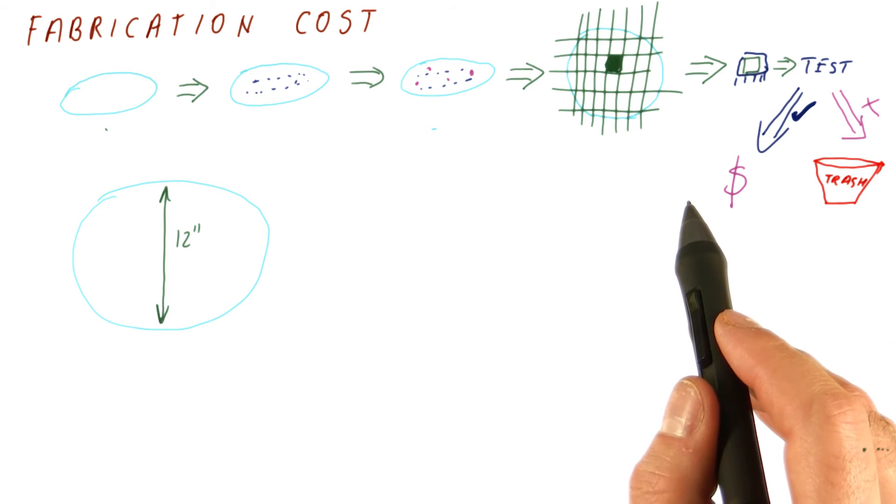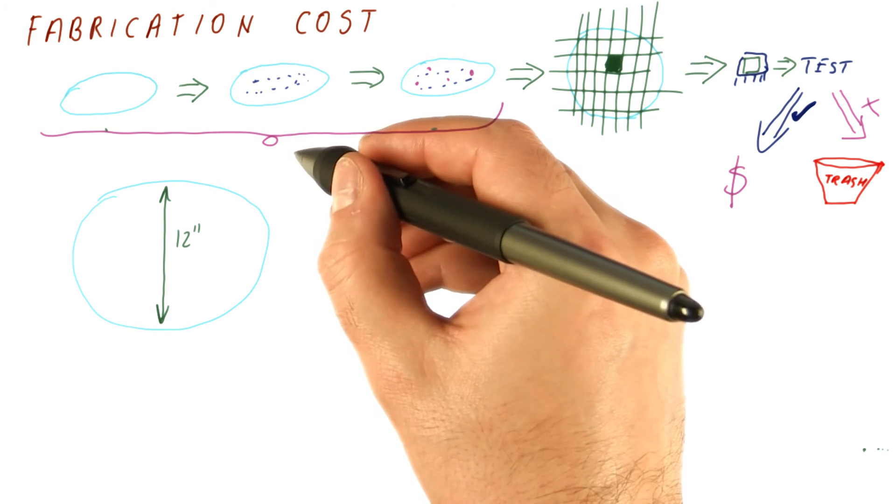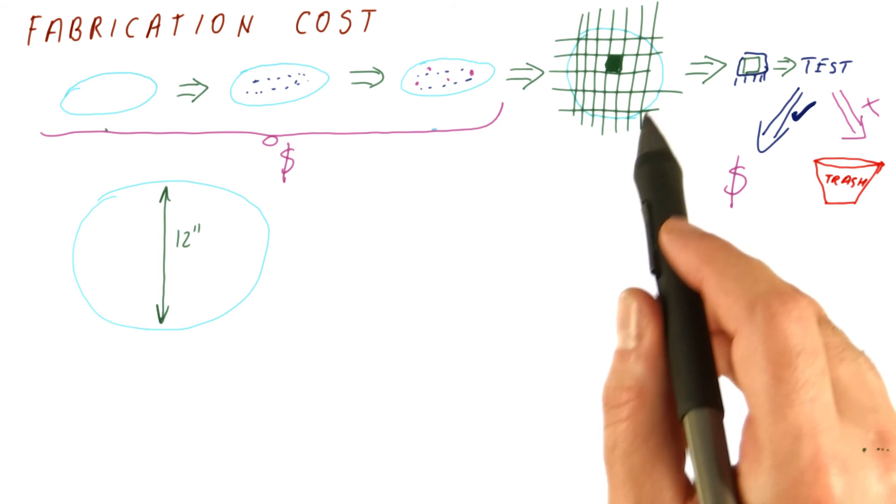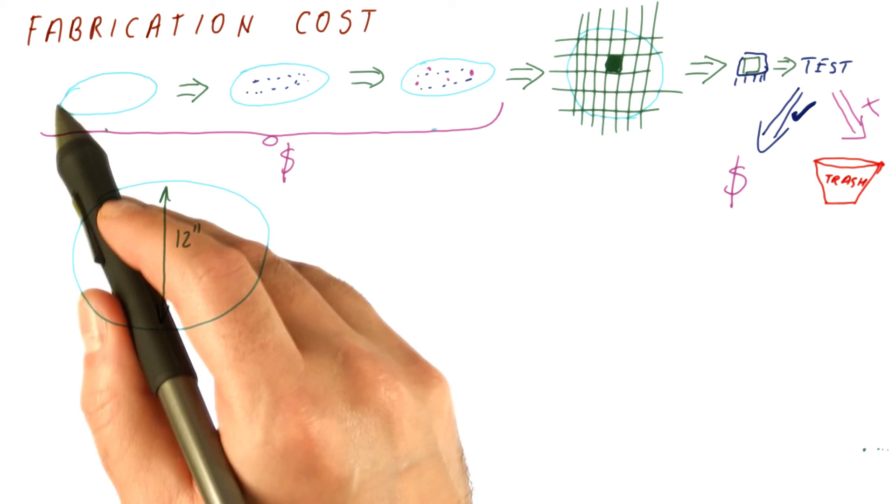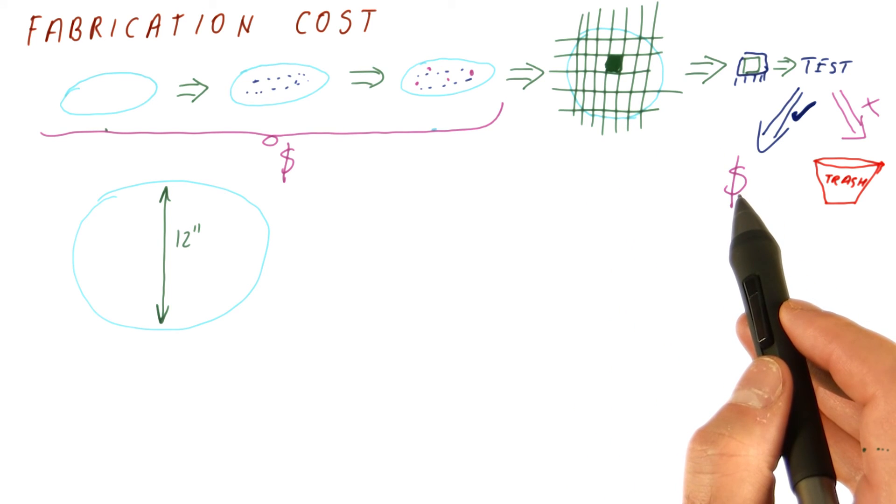But the size of the chip significantly affects the cost. Again, this entire process pretty much has a fixed cost. If we have more chips here because they're smaller, we will divide the wafer cost by the number of good chips that we get, and our chips will be cheaper.